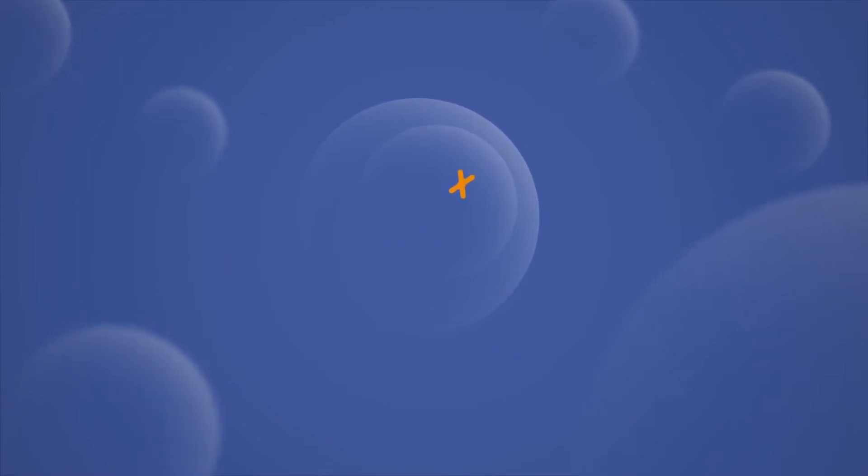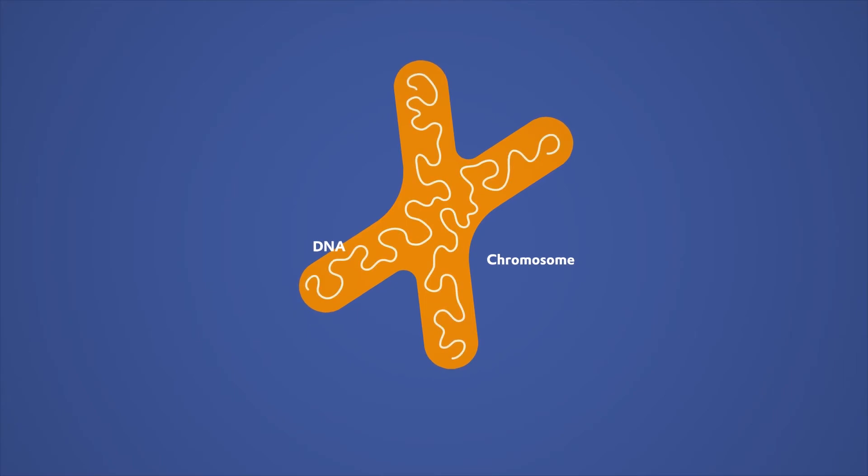The genetic information is stored in them on the DNA. In human beings, the DNA is distributed among 46 chromosomes, which are X-shaped structures.